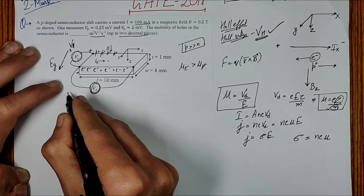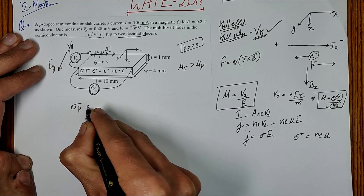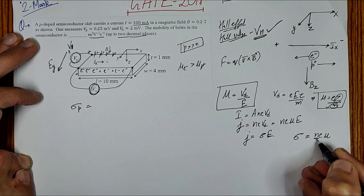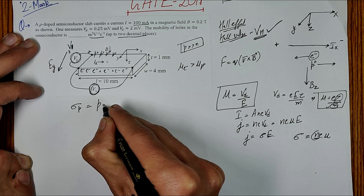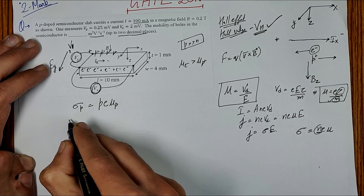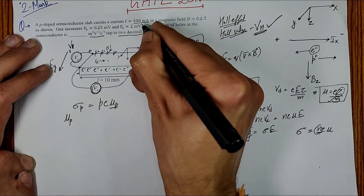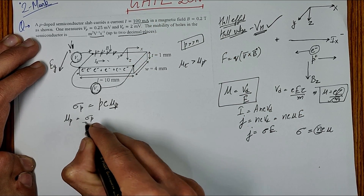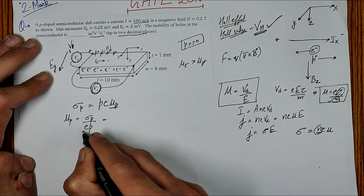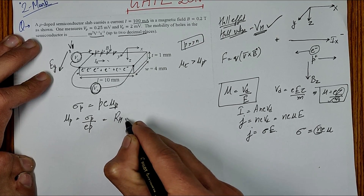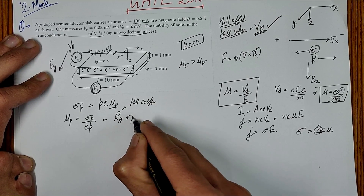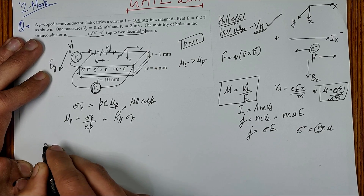For holes as majority carriers, conductivity σp = p·e·μp, where p is the number density of holes. From this, mobility of holes μp = σp / (e·p). Now, 1/(e·p) equals RH, the Hall coefficient. So μp = RH · σp. We need to find both RH and σp.